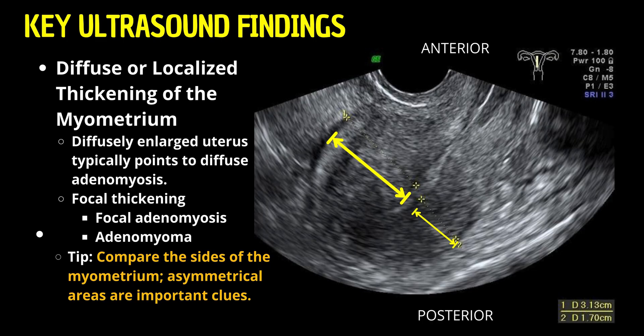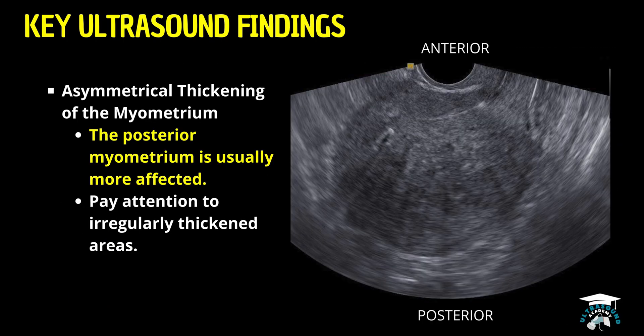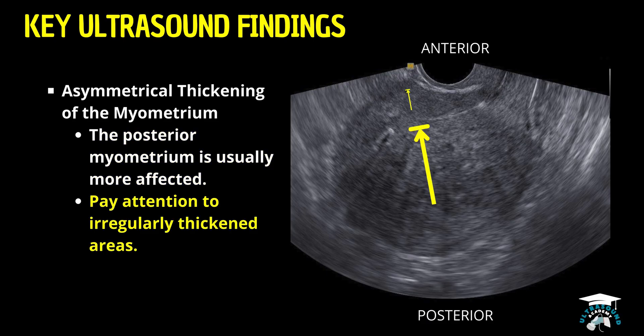The posterior wall is usually more affected in cases of adenomyosis. When you're scanning, pay close attention if one side appears irregularly thicker than the other.